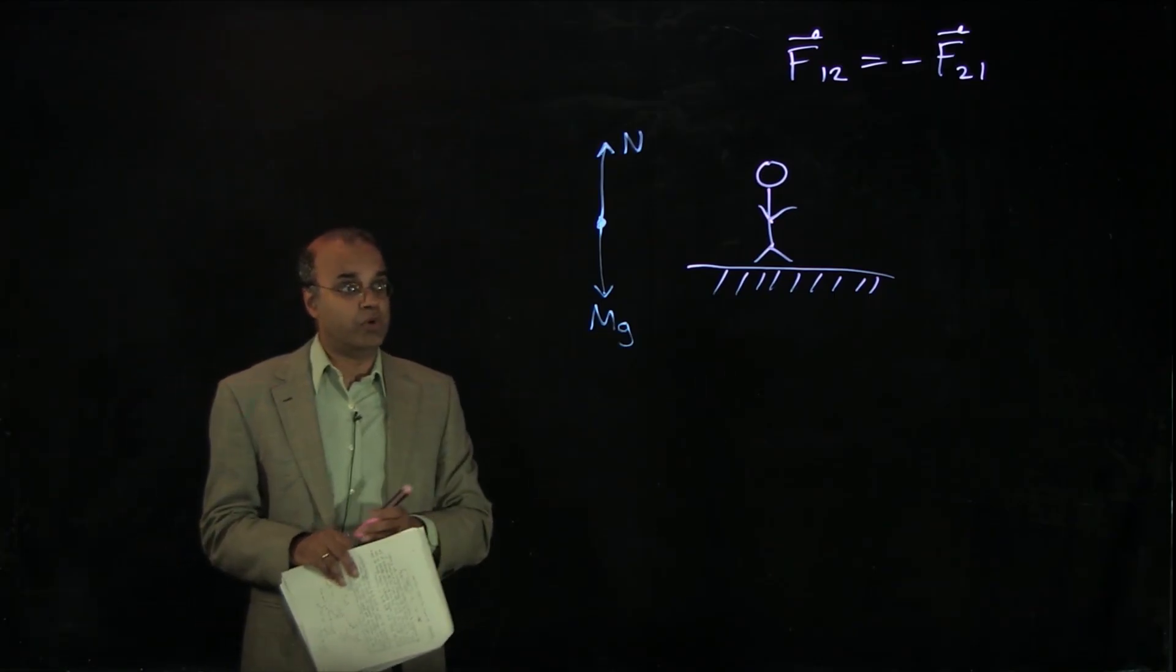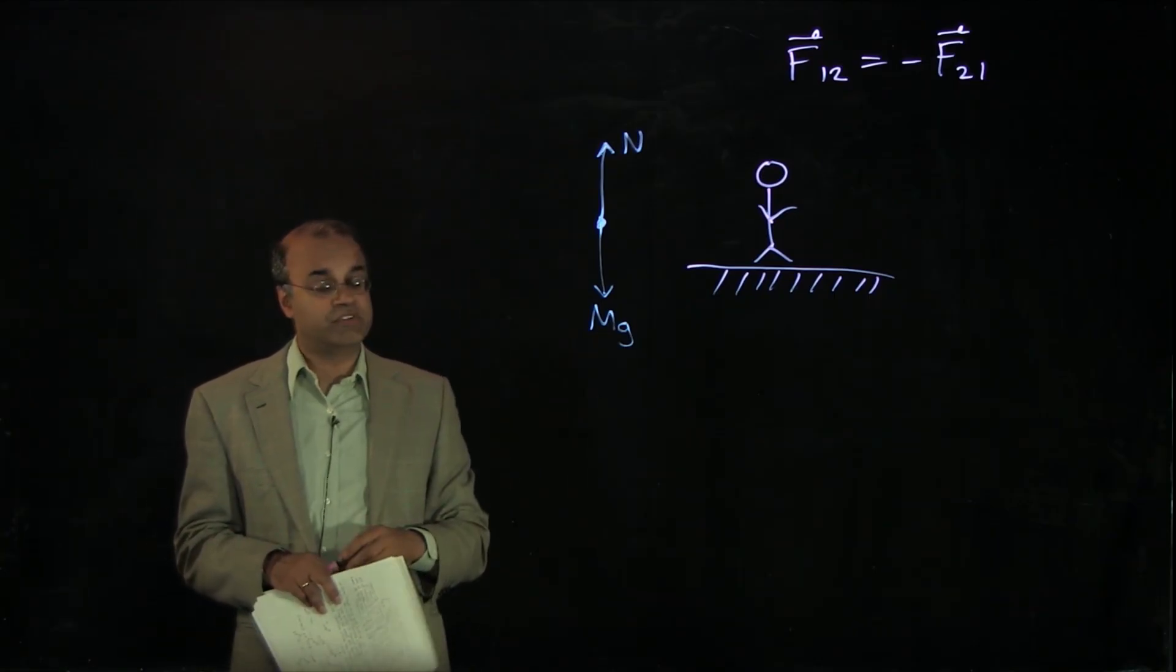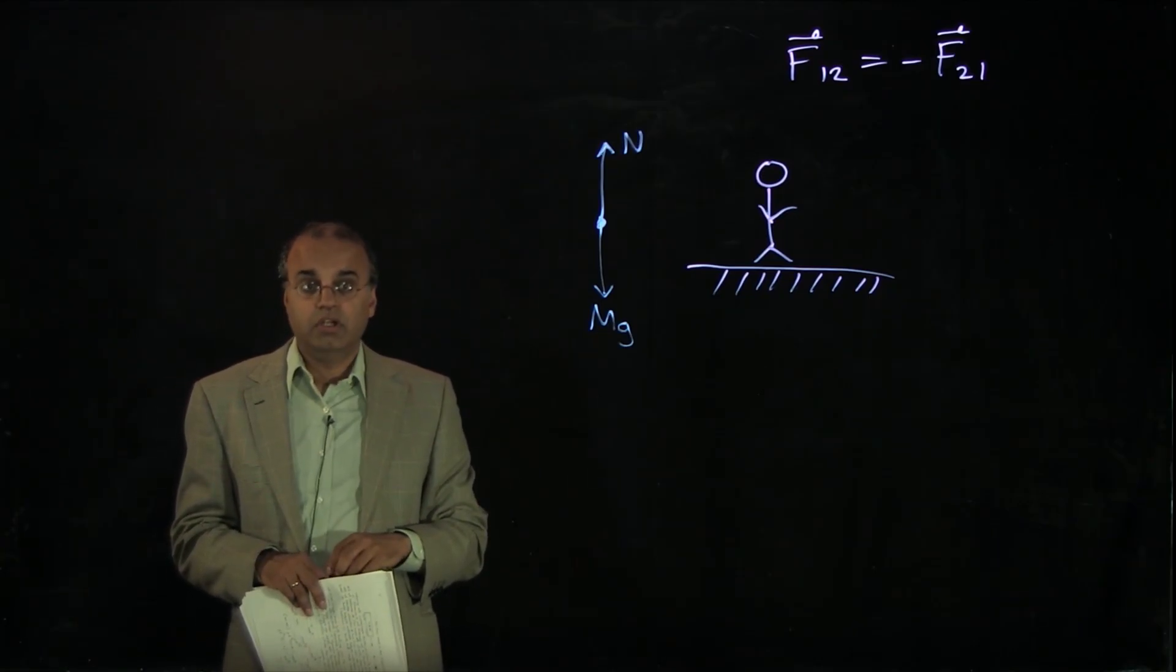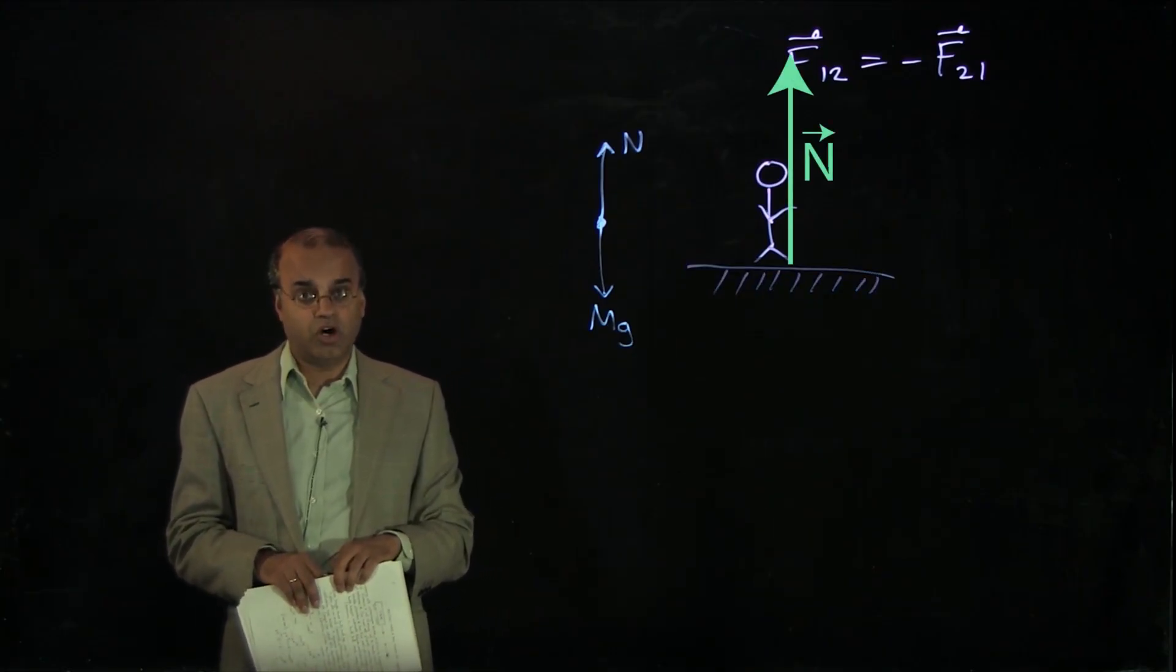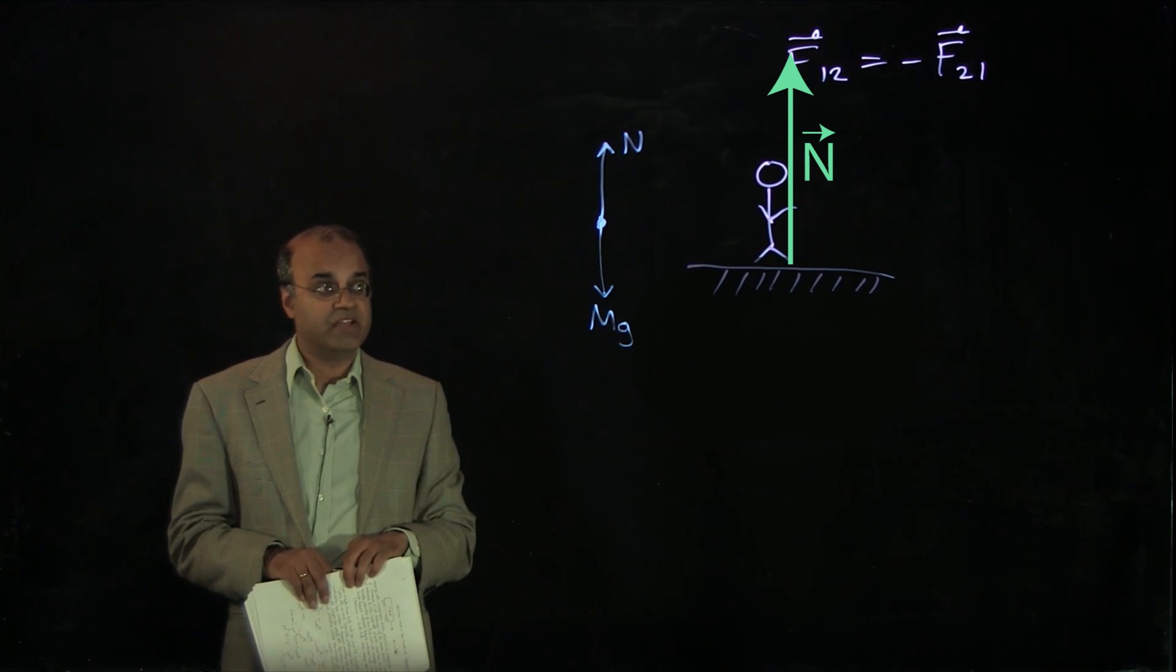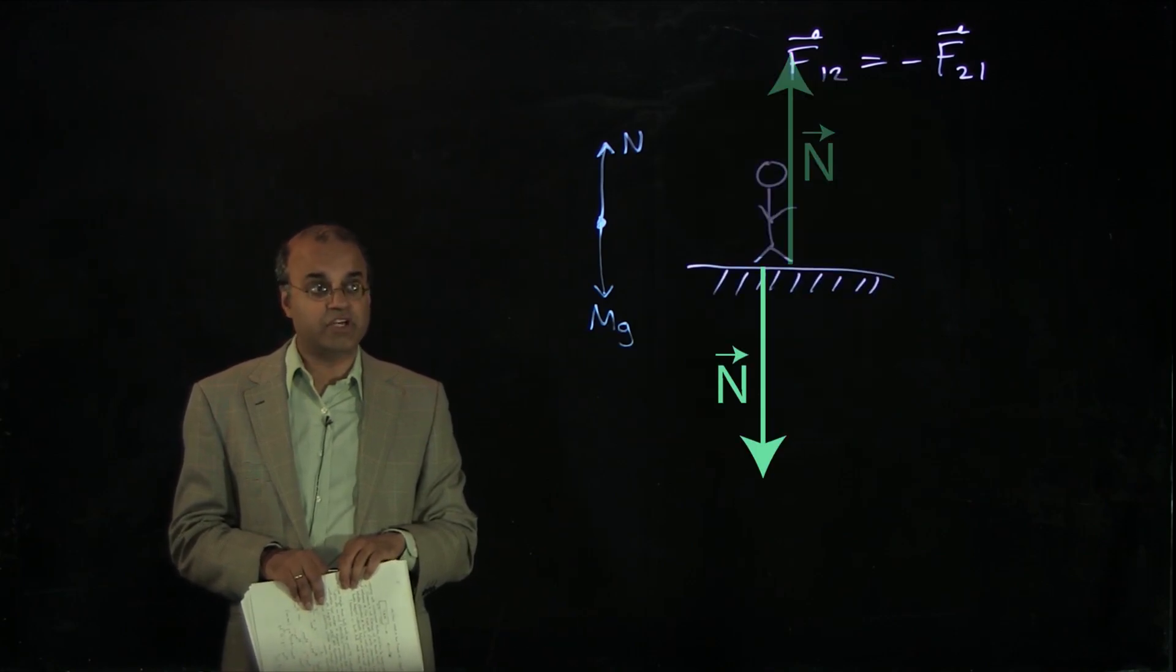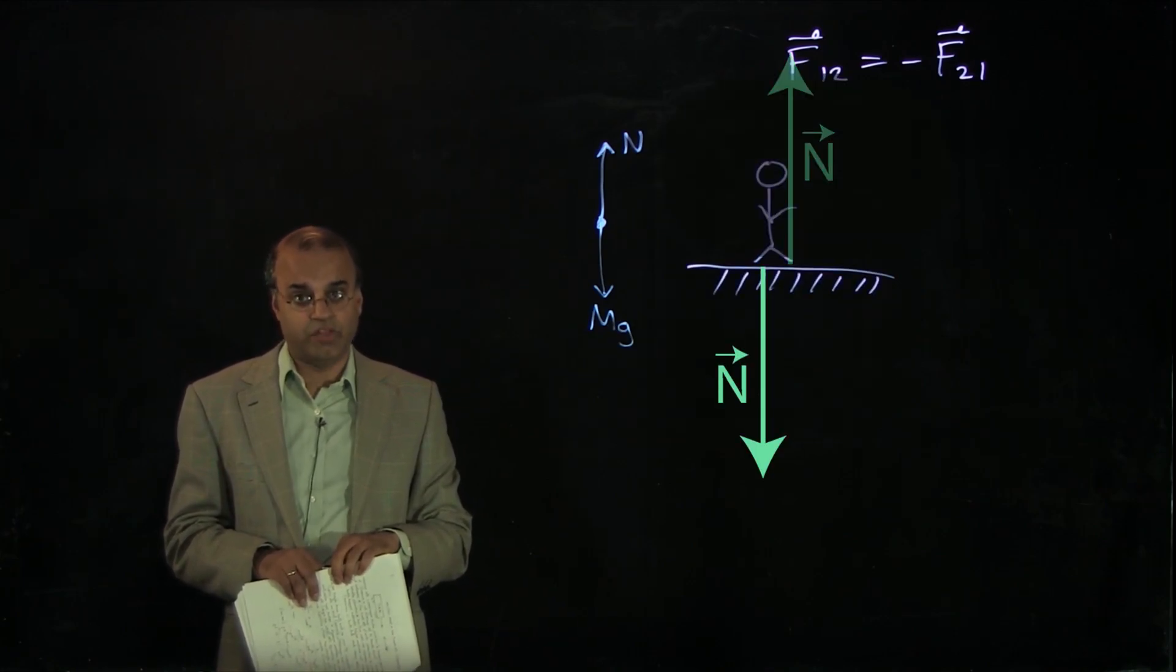Now, for the normal force acting on the person, that force is exerted by the ground. So the ground exerts an upward force N on the person. Newton's third law tells us that that means that the person must exert a downward force N on the ground. That is the interaction pair for Newton's third law for the normal force.